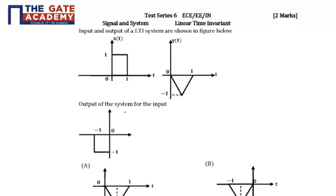Hello students, the following question is from Test Series 6, subject Signal Systems, chapter LTI System. The question asks: if the input and output of an LTI system are shown below as shown over here, then the output of the system for this input is equal to what?